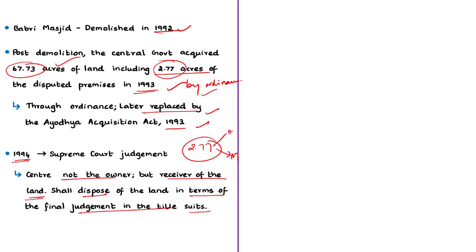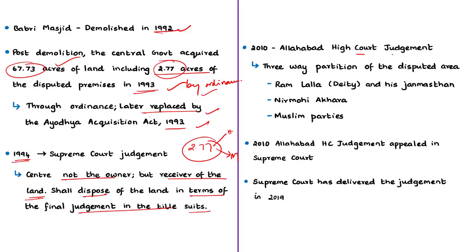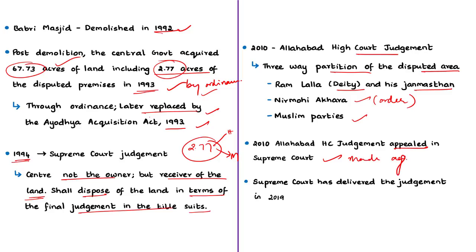In 2010, the Allahabad High Court delivered a judgment ordering a three-way partition of the disputed 2.77 acres — between the deity Ram Lalla and his Janmasthan, the Nirmohi Akhara (an older order of Hindu saints), and the Muslim parties. This judgment was appealed in the Supreme Court, and the present judgment addresses that appeal against the Allahabad High Court ruling.